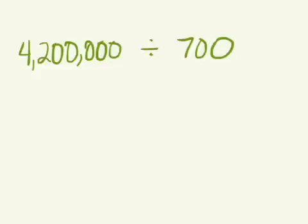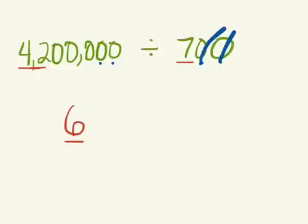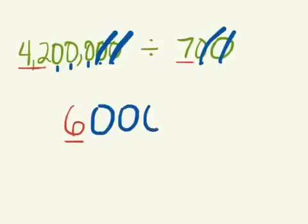Let's take a look. In that last problem, four million two hundred thousand divided by seven hundred, let's take a look at our fast fact and then deal with the zeros later. Our fast fact is forty-two divided by seven, which would be six. Now we need to deal with these zeros. What seems to be the pattern? It's almost as if these two zeros from our divisor — the number we are dividing by — cancel out two zeros in the dividend. And now we're left with one, two, three zeros left to place. Our answer is six thousand. So that's a neat little trick.